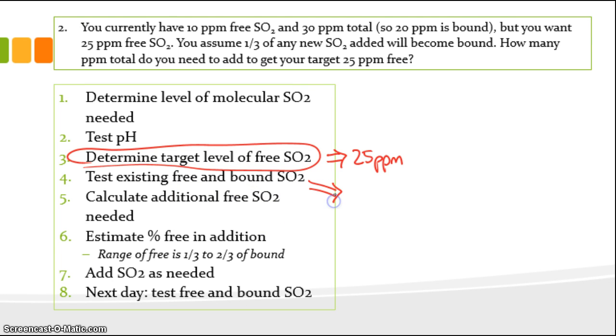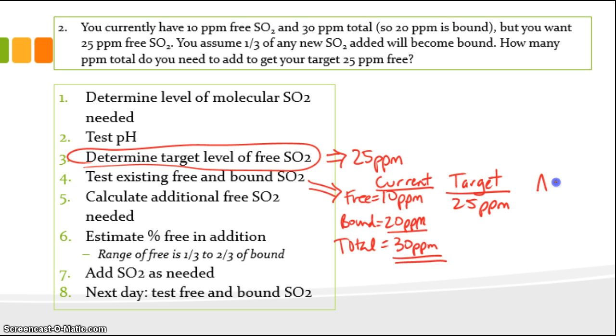So now we have to test the existing free and bound SO2. Well, that's already been done for us in problem two. We know that existing free is 10. Bound is 20. And total equals 30. But we know that our target is 25 parts per million. So this first column is current. Our target is 25. So we need to add 15 parts per million free.